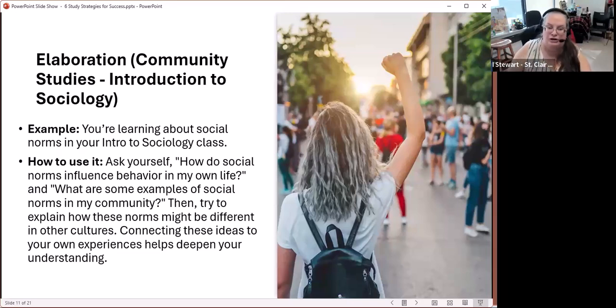Here's an example. Let's say you're in an introduction to sociology class, and you're learning about this idea of social norms. You could begin to ask yourself things like, how do social norms influence me? Why do we have certain social norms? What are some examples of social norms in my community? And then try to relate it to things you know and things that you have experienced. Try to explain how those norms might be different in other cultures. Connecting these ideas to your own experiences, to things you have seen and that you have heard and that you have participated in, can really deepen your understanding.